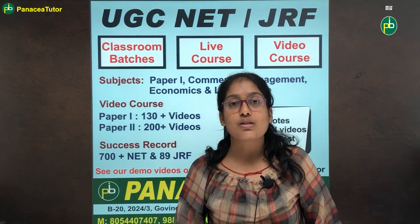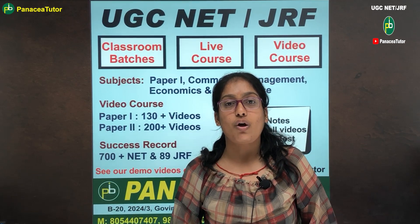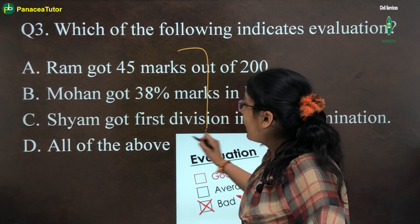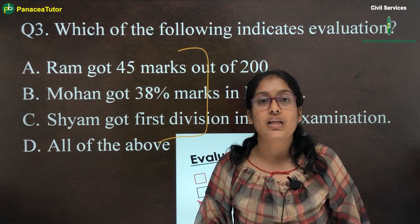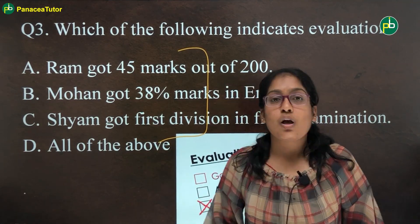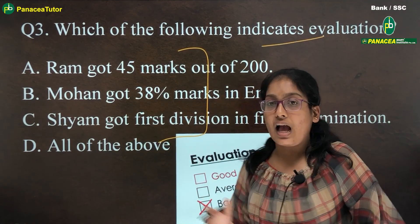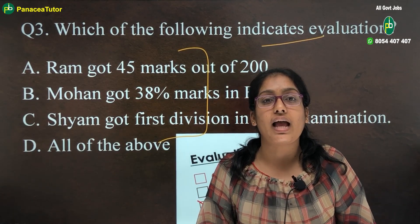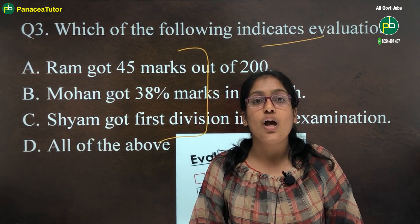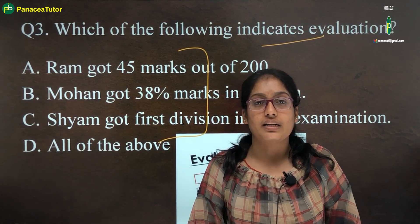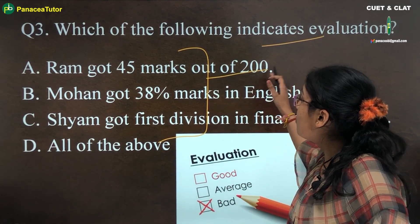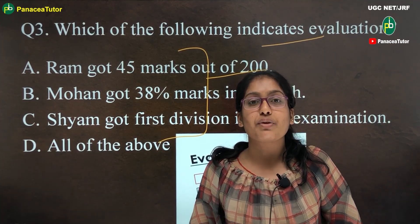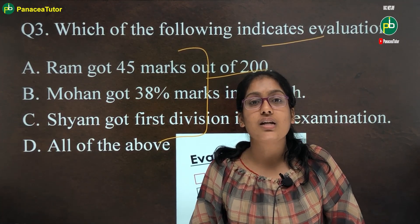The next question is: which of the following indicates evaluation? Evaluation is an act of passing judgment on the basis of set standards. The first option is: Ram got 45 marks out of 200 — this tells us Ram scored 45 marks, so we evaluate his result. This is evaluation.